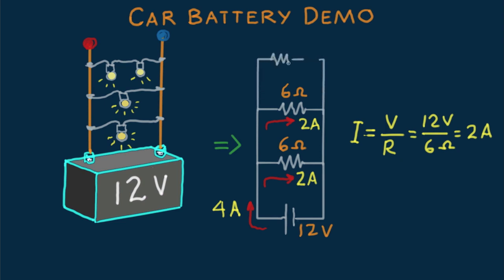With twice the resistance, the current's got to be half what it was in each of the lower branches. And now our schematic diagram looks like this.